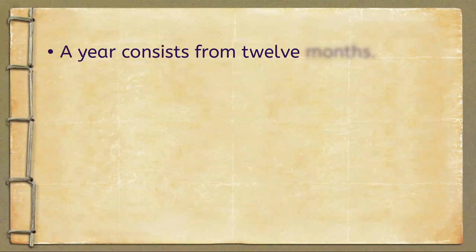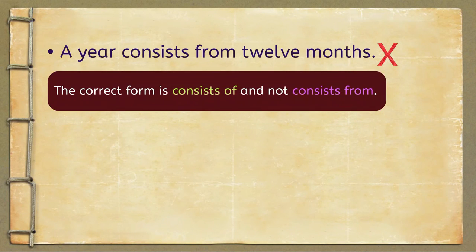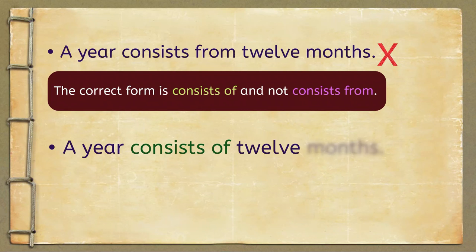Here is the next one: 'A year consists from 12 months.' This sentence is incorrect. The correct form is 'consists of' and not 'consists from.' Please repeat the correct sentence after me: A year consists of 12 months.